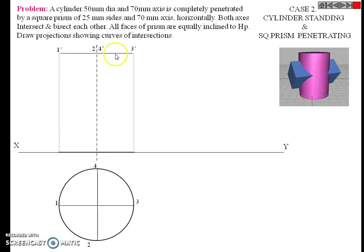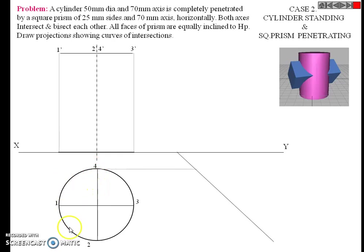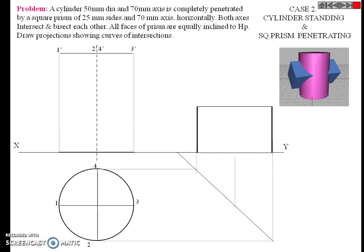Draw this 45-degree line. Project the top view of the cylinder for the side view. We project and draw this side view.